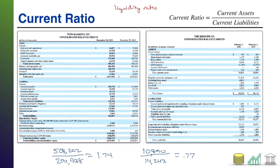We have now calculated the current ratio of both companies. Remember, it's going to tell us the ability of the company to pay its debts in the short term. When we look at Weiss Markets, this is telling us they have 1.74 times the current assets than they do in liabilities — in other words, they could pay off those current debts not just once, but 1.74 times. Kroger, on the other hand, at 0.77, can pay off with its current assets only 0.77 of its current liabilities — it doesn't even have enough in its current assets to cover those current liabilities.